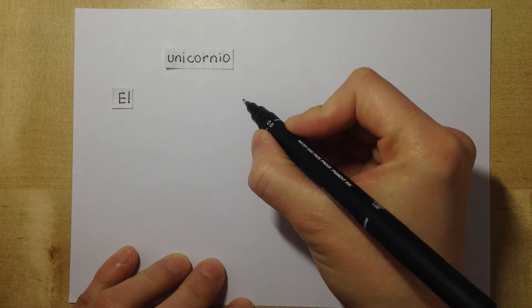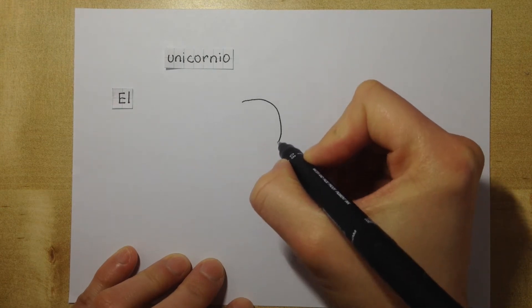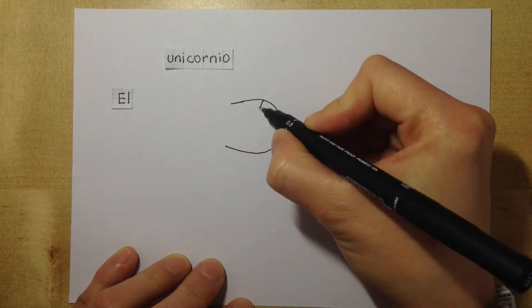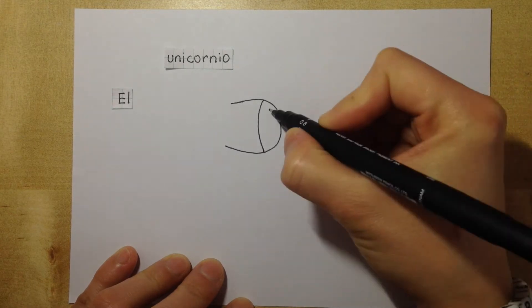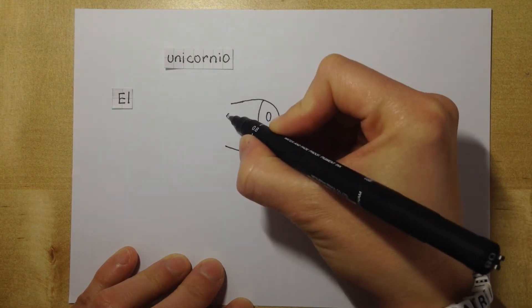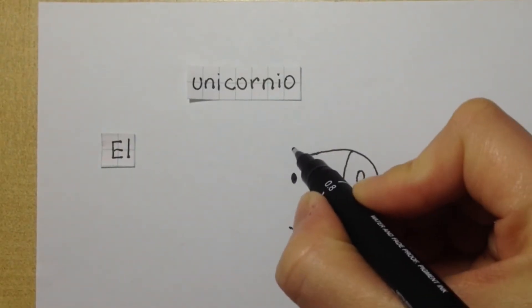We start with the head, big and round head, then the nose and one eye, because the unicorn is facing the right side.